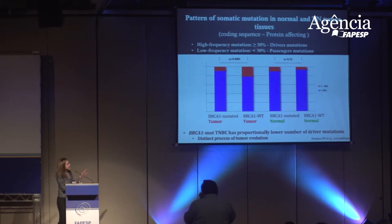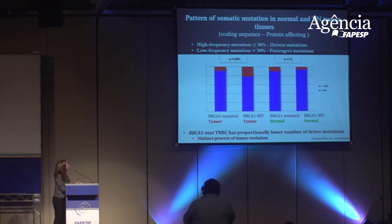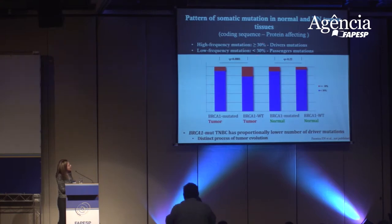We divided somatic mutations — those not present in blood — into high frequency and low frequency groups, classifying high frequency as driver mutations and low frequency as passengers. We detected that BRCA1 wild-type tumors have a higher proportional frequency of high-frequency driver mutations compared to BRCA1-mutated tumors. In normal tissue, we found no difference. This suggests that triple negative with BRCA1 mutation has proportionally fewer driver mutations, indicating the two groups have distinct processes of tumor evolution.